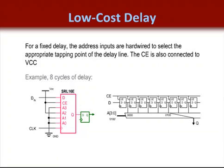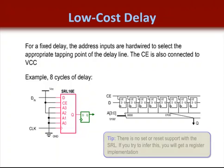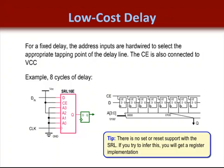In this case, the connections to the LUT inputs assign the number of clock cycles of delay. The value 0100 corresponds to 8, and that's attached to the address lines, making the LUT behave like a shift register with 8 clock cycles of delay. Synthesis tools such as XST will automatically use this feature as long as it is coded properly — so don't code for set or reset functionality, otherwise you'll infer actual registers and not the SRL primitive.